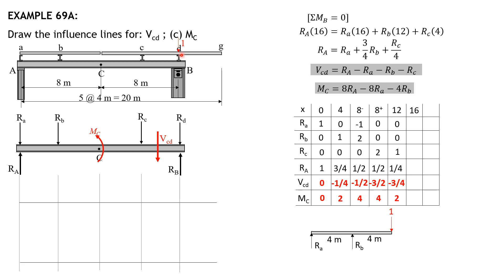When x equals 16, only r sub small d is 1 and r sub small a, r sub small b, r sub small c are all 0. So R sub A is 0. Shear in CD is 0 minus 0 minus 0 minus 0 equals 0. M sub C: 8 times 0 minus 8 times 0 minus 4 times 0 equals 0.